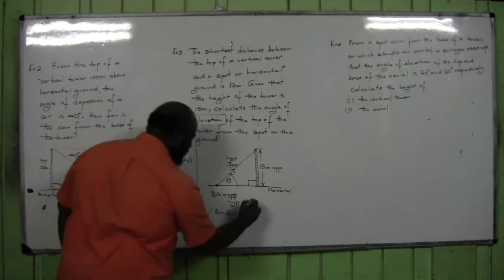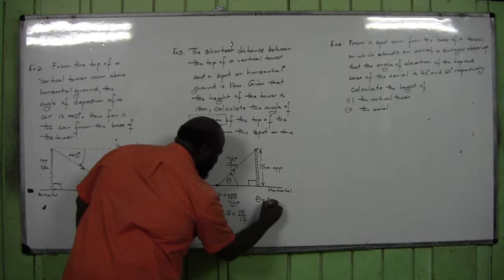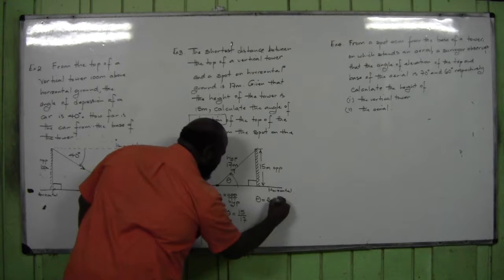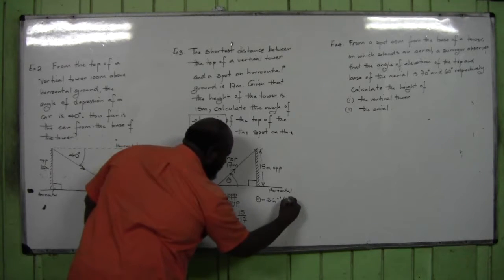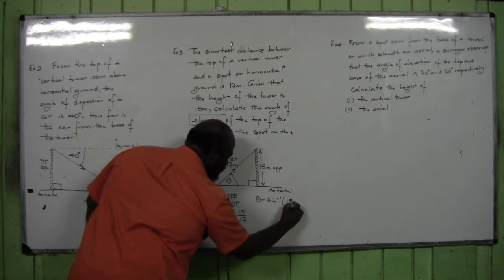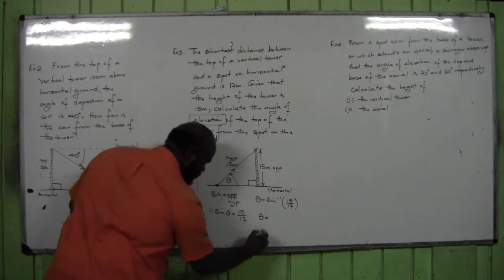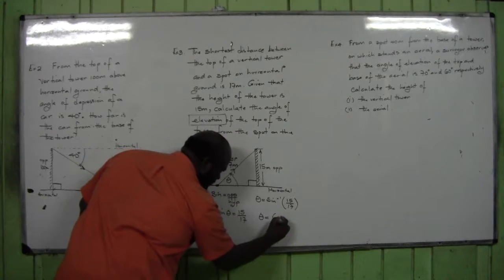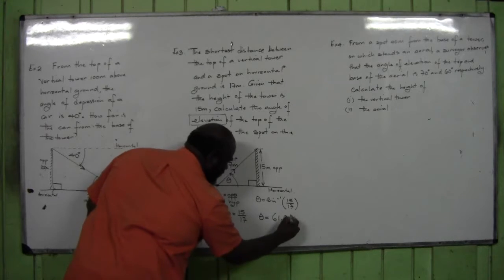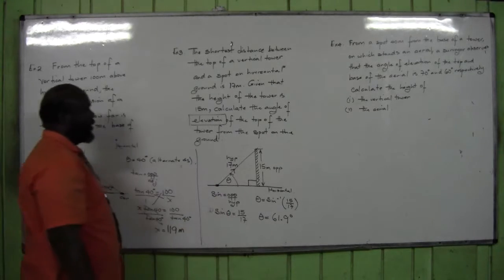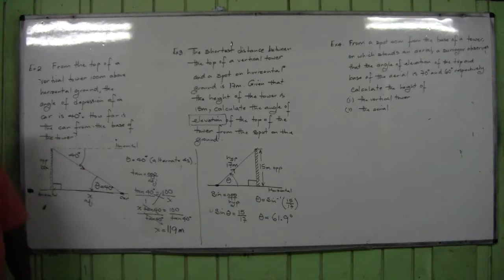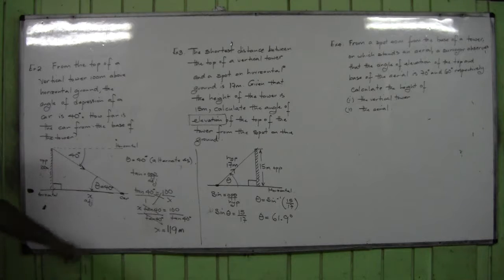To find the angle from its sine value, I use inverse sine. So theta = sin⁻¹(15/17), which equals 61.9 degrees. Therefore, the angle of elevation of the top of the tower from the spot on the ground is 61.9 degrees.